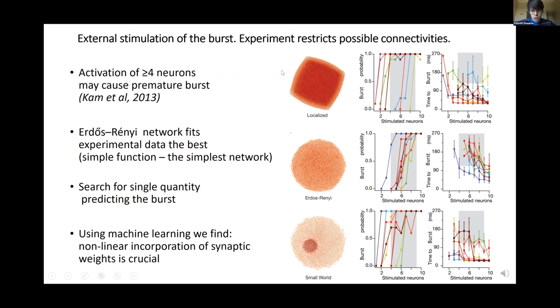We studied three physiologically motivated networks: localized, where the probability of connection between two neurons is higher if they are closer to each other; Erdős-Rényi, where the probability of connection between any two neurons is the same; and small world, which we obtain from Erdős-Rényi by adding some particular types of motifs. We look at the probability of the burst and the time to the burst as a function of the number of stimulated neurons, and we compare it with the results of the experiment. We see that the best overlapping happens for the case of the Erdős-Rényi network.